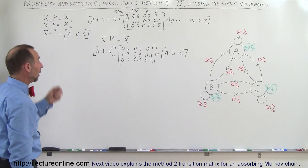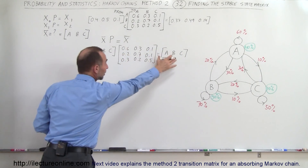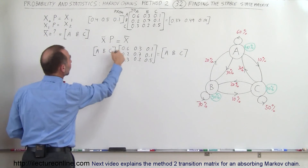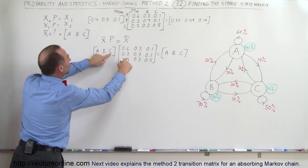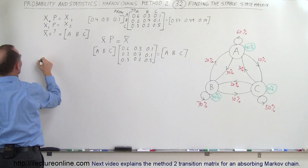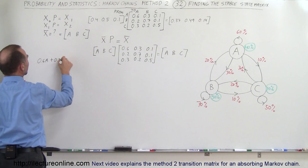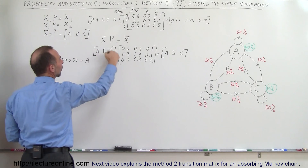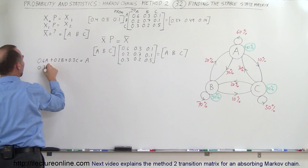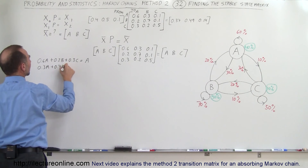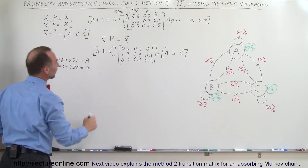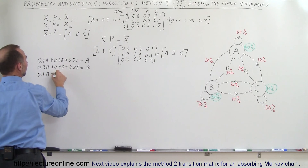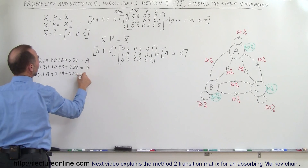Now let's multiply this out and set it equal, ending up with three equations and three unknowns to solve for A, B and C. Multiplying the row times each column: 0.6A + 0.2B + 0.3C = A; then 0.3A + 0.7B + 0.2C = B; and finally 0.1A + 0.1B + 0.5C = C.